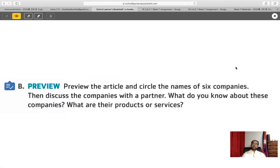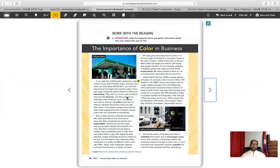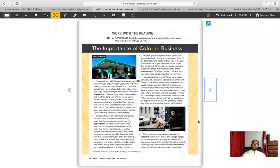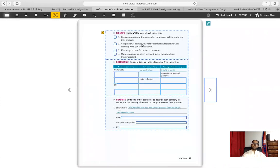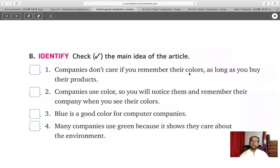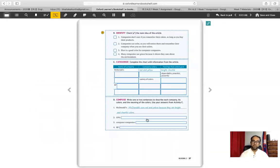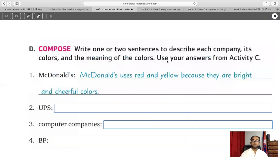Now it's time to read. Please read the article on page 36, 'The Importance of Color in Business.' When you finish reading, complete your assignment using the Google Form available in your documents. Your assignment includes: identifying the main idea of the article — choose one from four options — and then categorizing information by completing a chart with the company name, its color, and what feelings those colors give to customers or what feelings the colors carry.